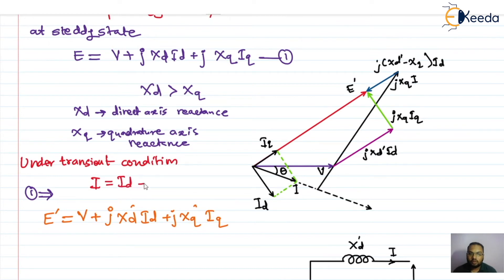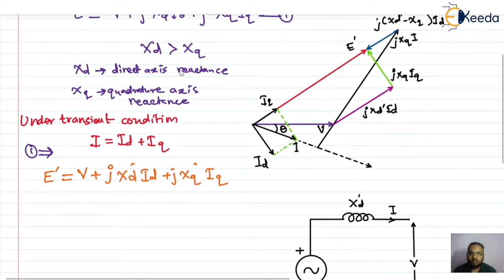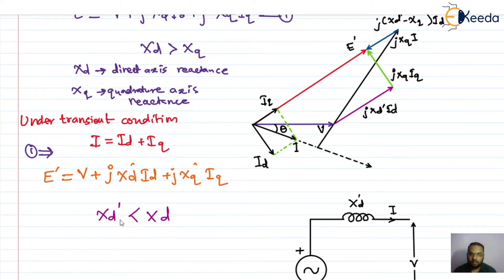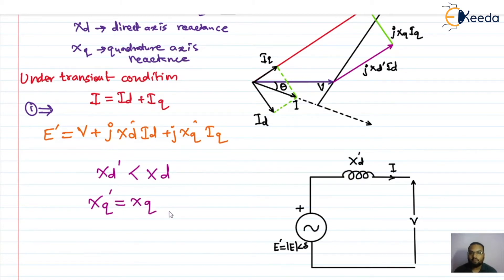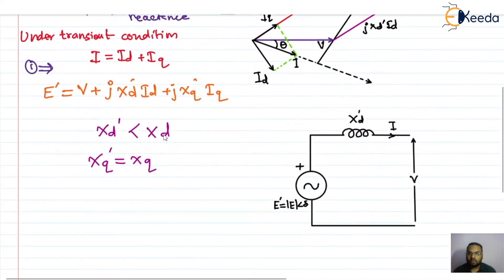The total current I is the combination of the quadrature axis current and the direct axis current. Under transient condition, Xd' is less than Xd. Also, Xq' is the same as Xq, because the main field is along the direct axis, so the transient does not have much impact on the quadrature axis. That is why Xq' equals Xq.